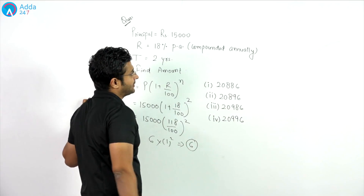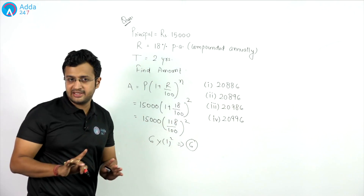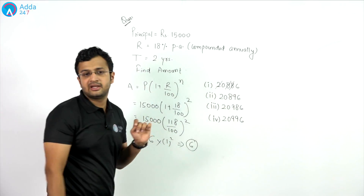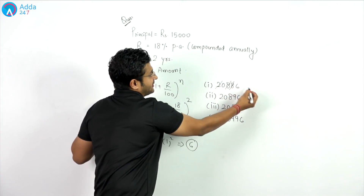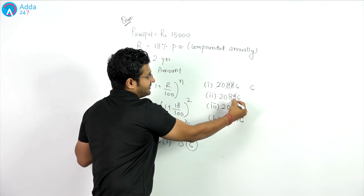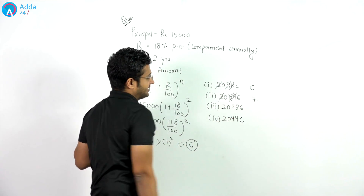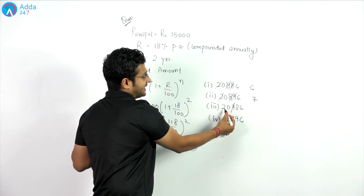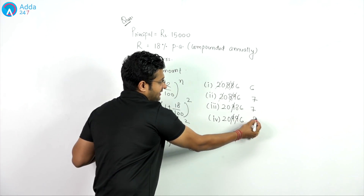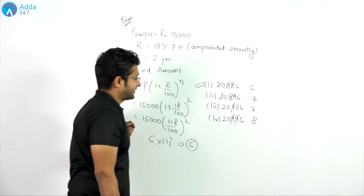Now let's check the digital sums of the options. For the first option: 8 plus 8 is 16, plus 2 is 18, which is a multiple of 9, so it becomes 0. Only 6 is left, giving a digital sum of 6. For the second option: 9 becomes 0, then 8 plus 2 is 10, which gives 1, and 1 plus 6 is 7. For the third option: 9 becomes 0, 8 plus 2 is 10 giving 1, and 1 plus 6 is 7. For the fourth option: 9 and 9 both become 0, and 2 plus 6 is 8. The only option matching our digital sum of 6 is the first option, so the answer is option 1.